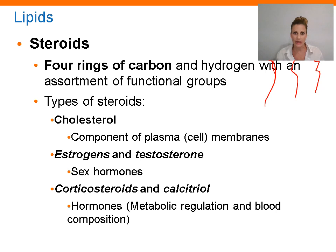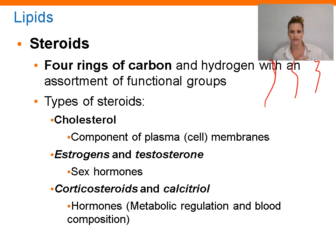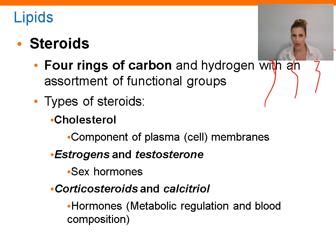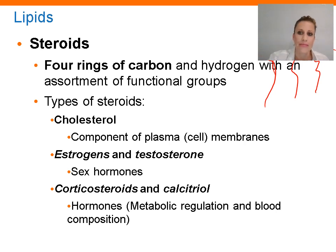Say we haven't eaten in a while and we need to use this fat for energy. We would just break off a fatty acid and go use it for energy, then break off the next one, and so on. The type of chemical reaction we use to do that is called hydrolysis. Hydro meaning water, and lysis means to break apart. So water comes in and breaks that bond, and then we have the fatty acid that we can use for energy.